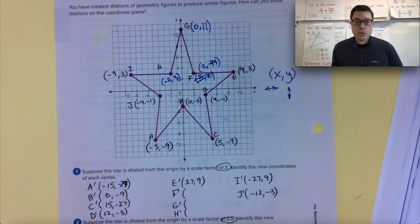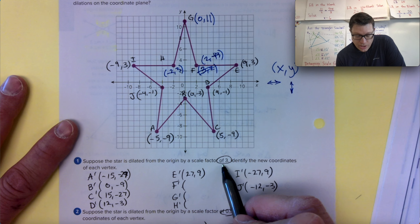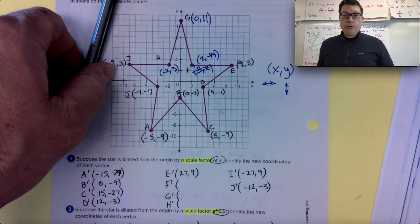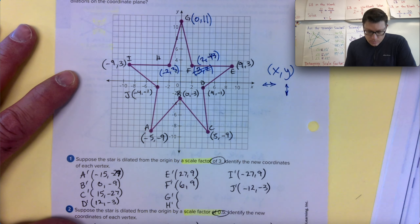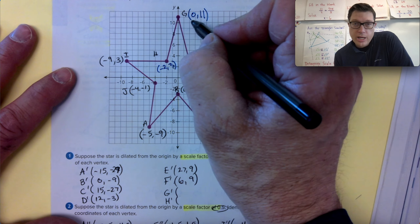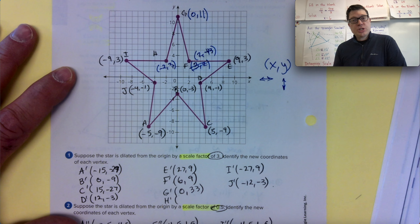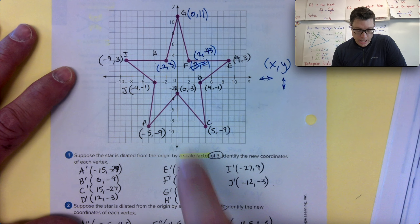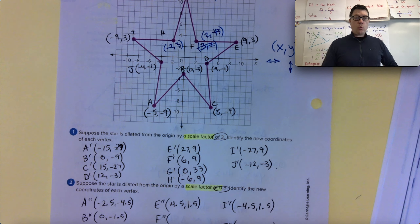With that in mind, let's answer question one. F prime is going to be this coordinate changed by a scale factor — that's the vocabulary word — a scale factor of three. Every coordinate is multiplied by three, so this would be two times three and three times three. For G, the first coordinate is zero, so three times zero stays zero, but three times eleven is thirty-three. A scale factor changes the coordinates of your shape by multiplication. Every X coordinate and Y coordinate were multiplied by three.